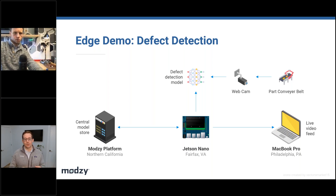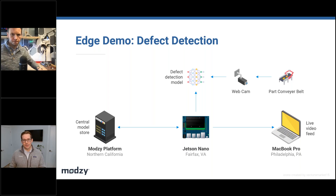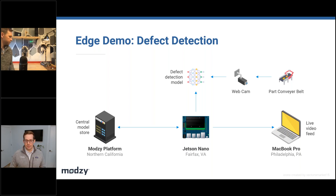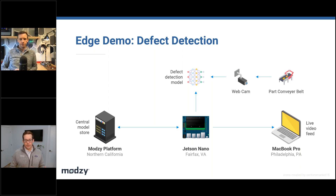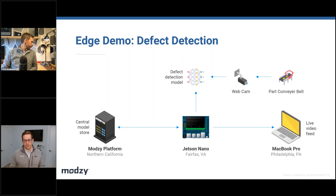We've taken the model and deployed it to Seth's Jetson Nano that you see behind him. As you can see that plate spinning, we input that video stream in real time and then generate an output stream with the detections rendered on each image frame. I'm going to spin up a simple web application and show you what it looks like from my laptop here in Philly.